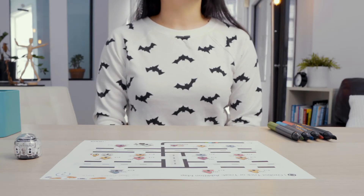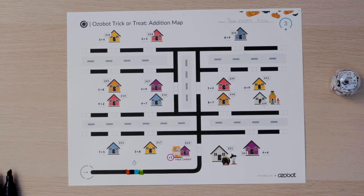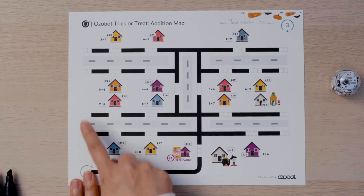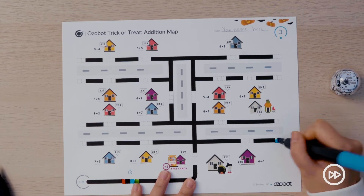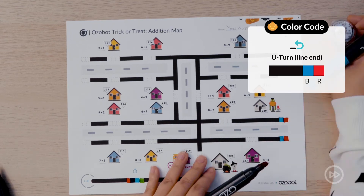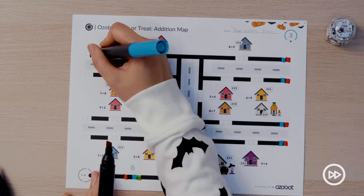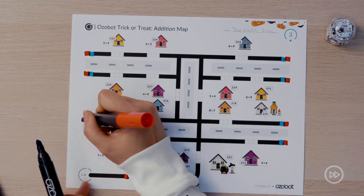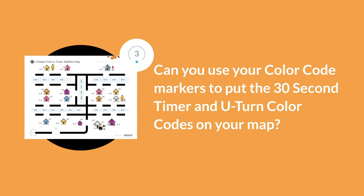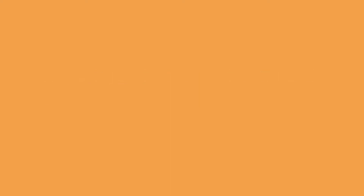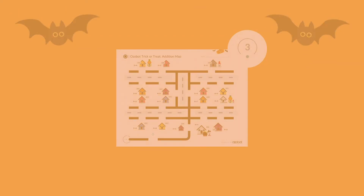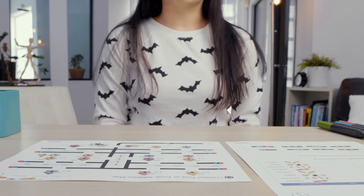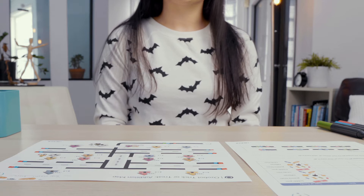Directionality, or the way Ozobot is traveling, is important so it reads color codes correctly. At the end of each street or path we will add a U-turn color code. This tells your bot to turn around at the end of each street. I will add the color sequence blue, red at the end of each path. Can you use your color code markers to put the 30-second timer and U-turn color codes on your map?